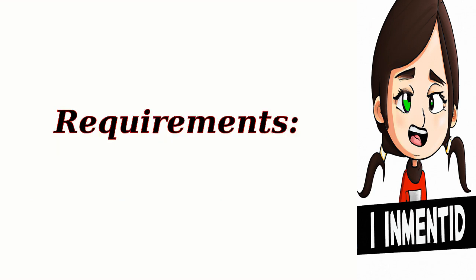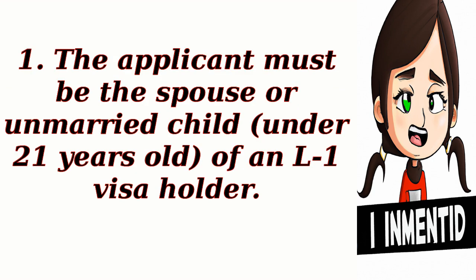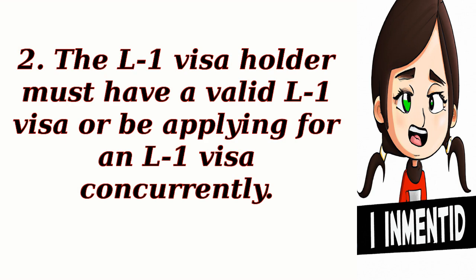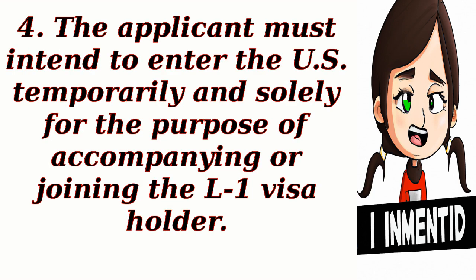Requirements: To be eligible for an L-2 dependent visa, the following requirements must be met. The applicant must be the spouse or unmarried child under 21 years old of an L-1 visa holder. The L-1 visa holder must have a valid L-1 visa or be applying for one concurrently. The applicant must demonstrate a bona fide spousal or parent-child relationship with the L-1 visa holder, and must intend to enter the U.S. temporarily and solely for the purpose of accompanying or joining the L-1 visa holder.